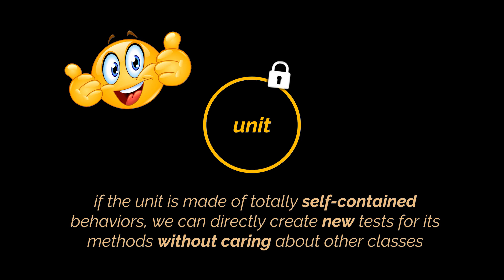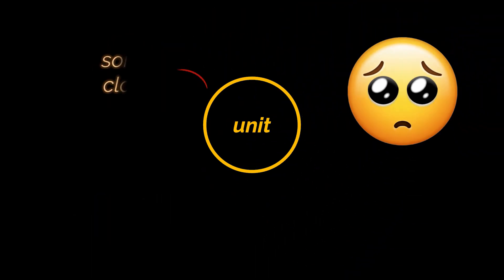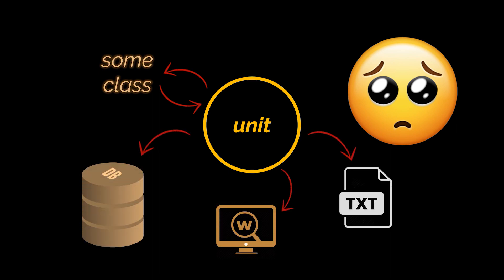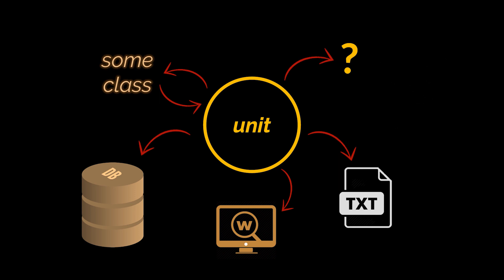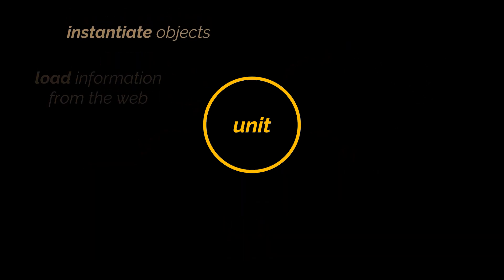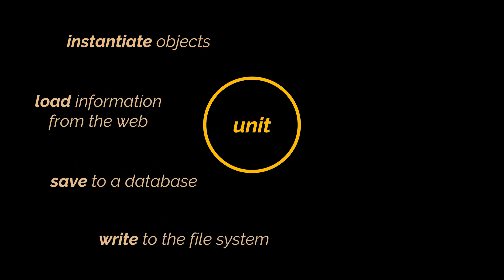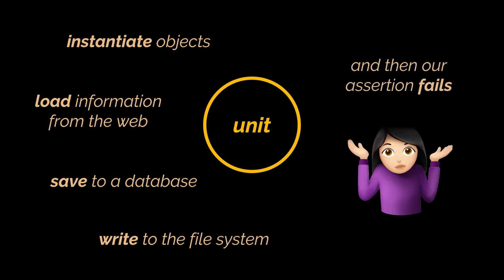But most, if not all of the time, these classes will need to interact with one another — with databases, with websites, with the file system. Some of these things are slow, some require a connection, some are unreliable. And if we're doing test-driven development and building our tests alongside our application, some of these objects may not even exist yet. If we write a test that instantiates multiple objects, loads from the web, saves to a database, and then an assertion fails, we won't know where to look because we've introduced multiple points of failure.